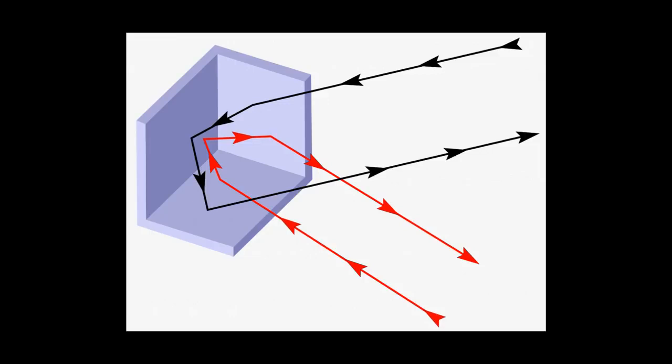If you add a third mirror such that all three mirrors are at right angles to each other, this works in three dimensions. Since this forms the corner of a cube, this is called a corner cube retroreflector.